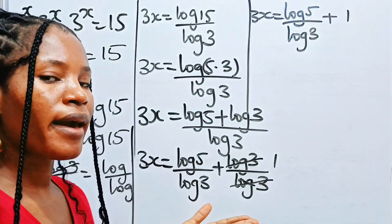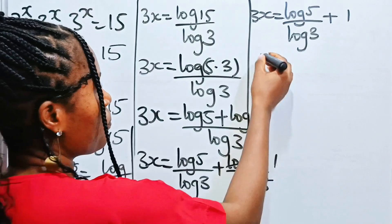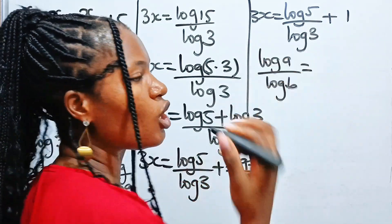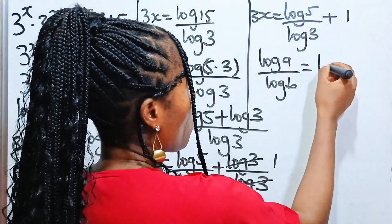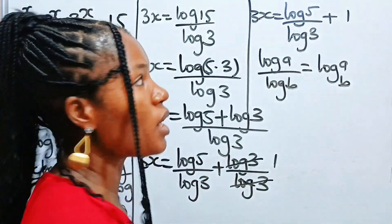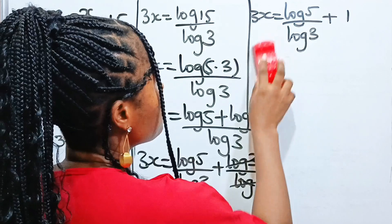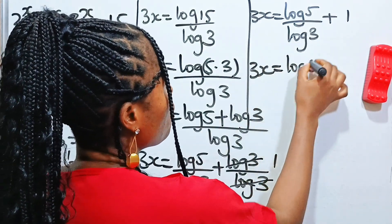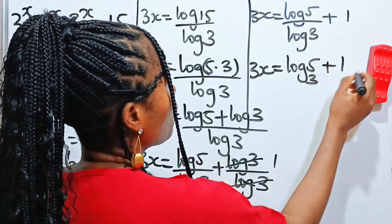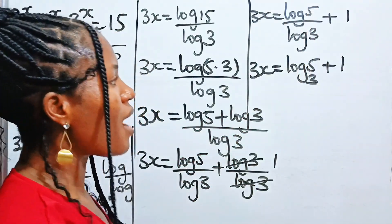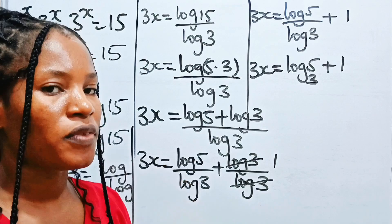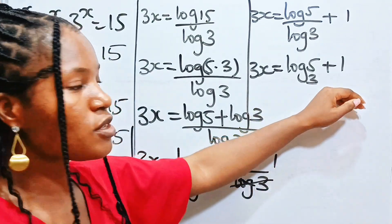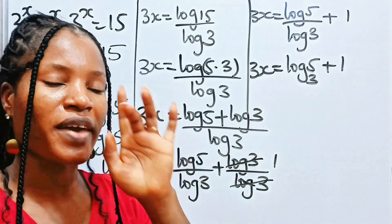Now where you have log a divided by log b — log a over log b — according to the change of base rule, this is equal to log a base b. So we can write this as 3x is equal to log 5 base 3 plus 1. Remember we are looking for x, not 3x, so we need to divide both sides by 3.